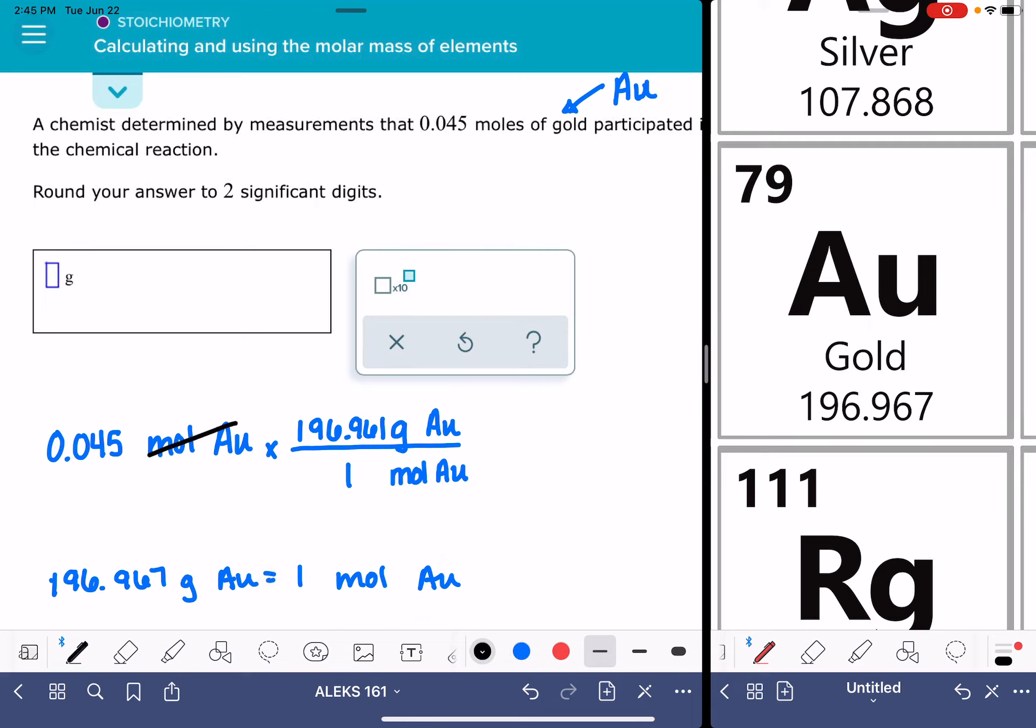So as you can see, our moles of gold are going to cancel out. That unit's going to cancel out, and we're going to carry out the math on this problem.